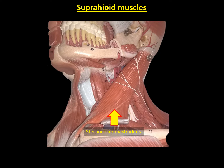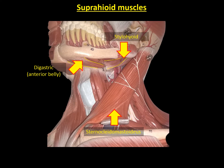Here we have the left lateral part of the model, where we can observe the suprahyoid muscles. We can first observe the digastric muscle anterior belly at the inferior part of the body of the mandible. Posterior to this belly, we can see the stylohyoid muscle, which is being crossed by the posterior belly of the digastric muscle. Superior to the anterior belly of the digastric muscle and of the stylohyoid muscle, we can see part of the mylohyoid muscle.